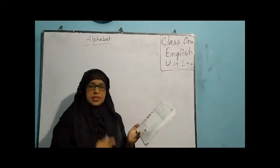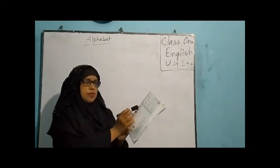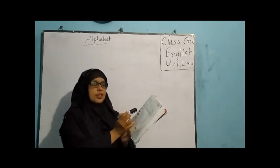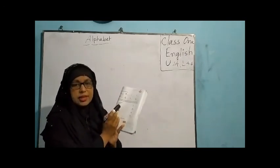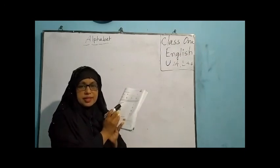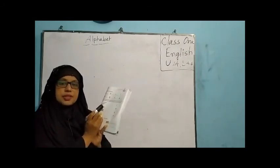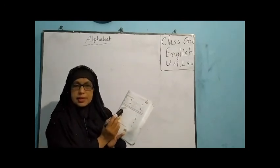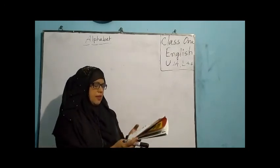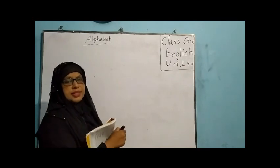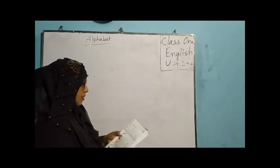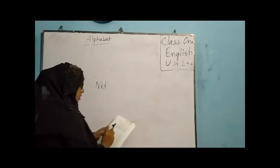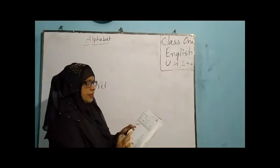First, you have to say the words for each picture. First picture — what's this? Net. N-E-T. Net means 'jau'.